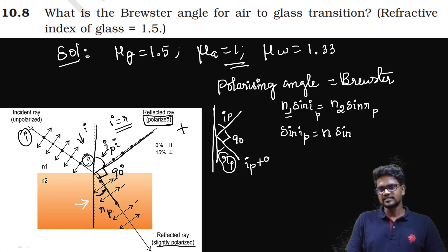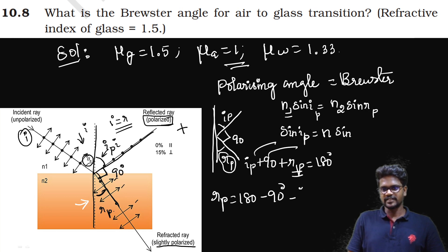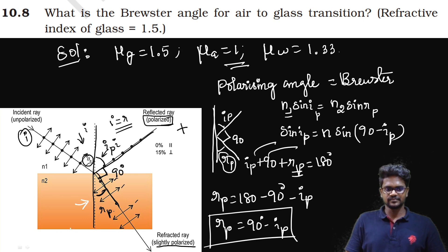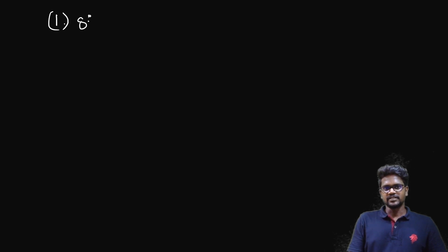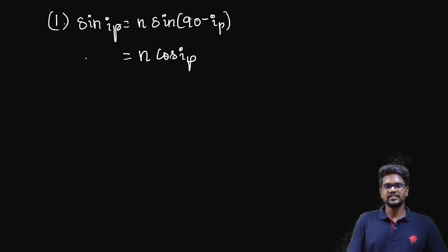Since the angle between the reflected ray and refracted ray is 90 degrees, we get IP plus 90 degrees plus RP equals 180 degrees. Therefore RP is equal to 90 degrees minus IP. Substituting into Snell's law: sin(90 minus IP) equals cos IP. So sin IP divided by cos IP equals n, which gives us tan IP equals n.